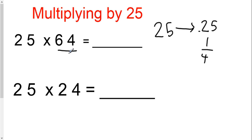I'm going to take the non-25 number, and I'm going to divide it by 4. 64 divided by 4 is 16.